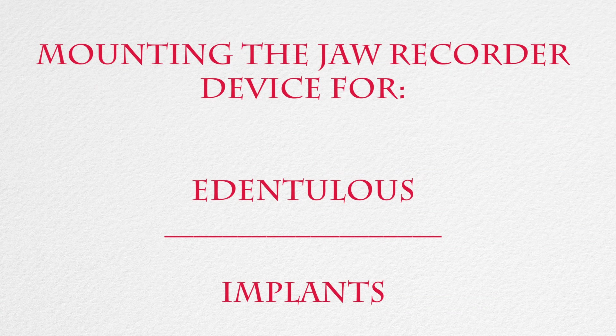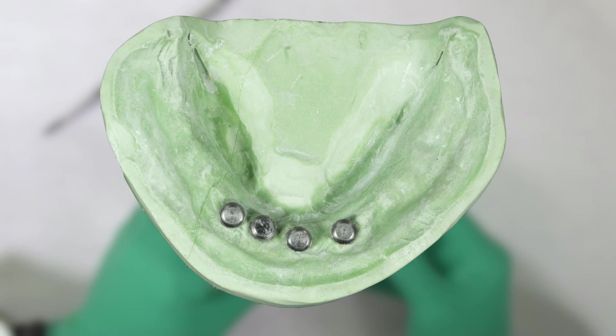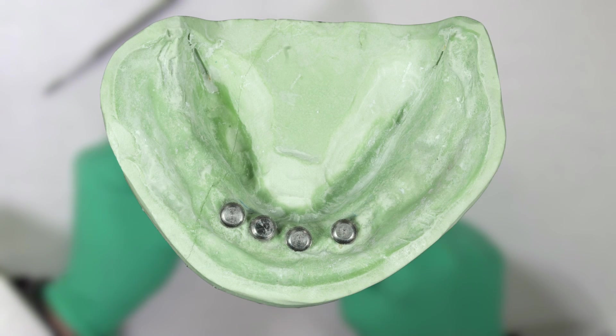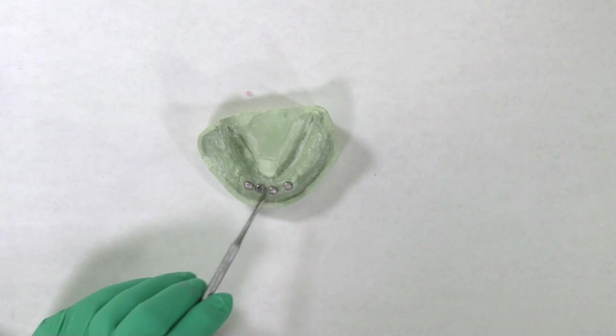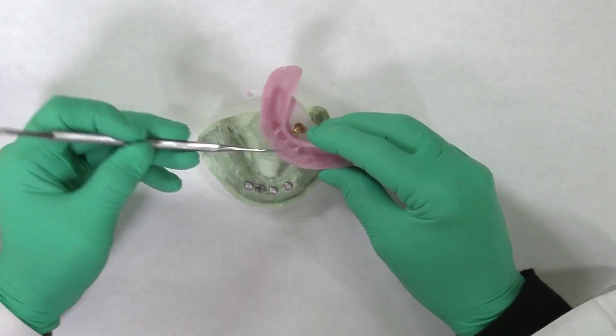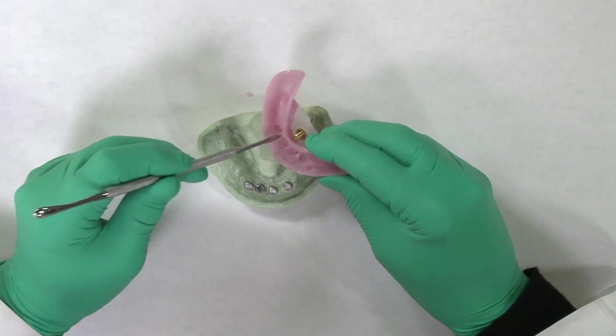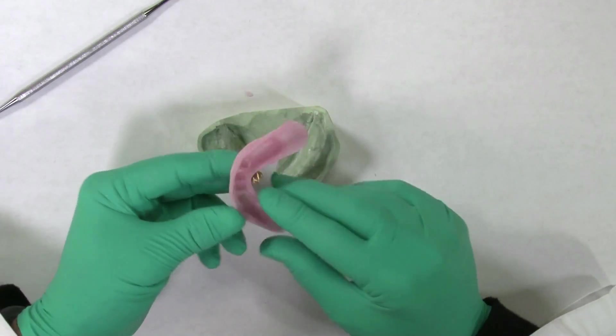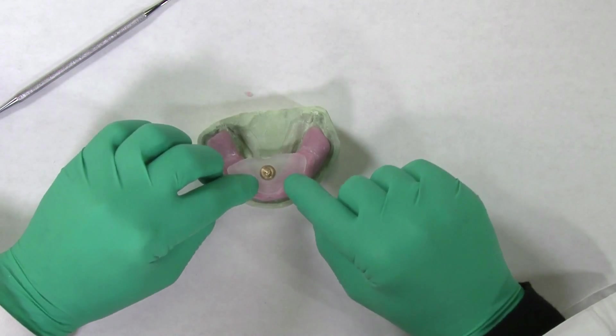Mounting the Mossad jaw recorder for the edentulous arch against implant overdenture. If a patient is to have mandibular implants, the lower base plate can be fabricated with recesses to fit over the retentive elements of the implants. This will prevent rocking of the base plate due to incomplete seating over the implants. If there is concern as to the clearance of the base plate over the implants, holes can be cut in the base plate to ensure seating and to provide visual confirmation of this seating.